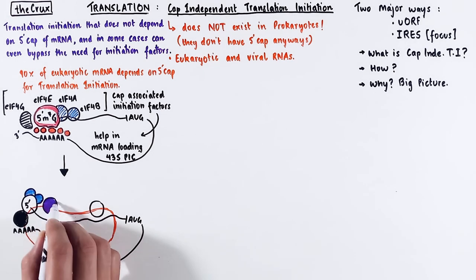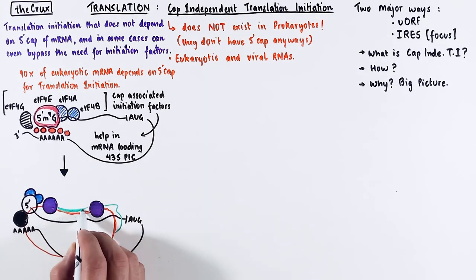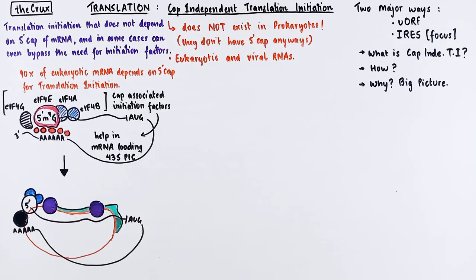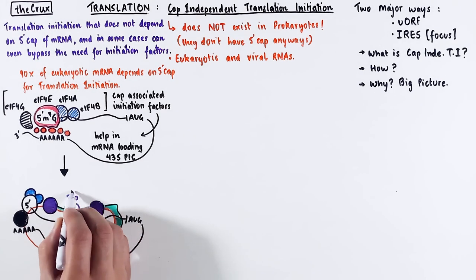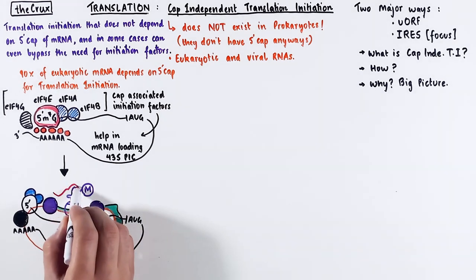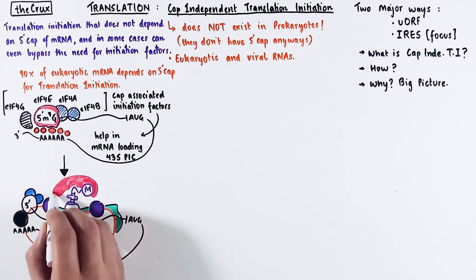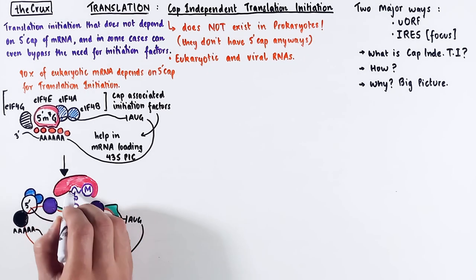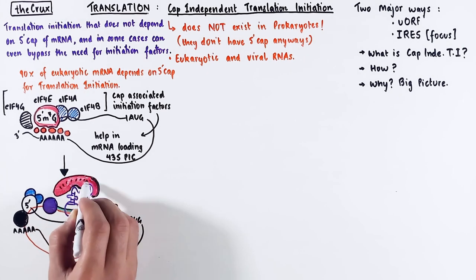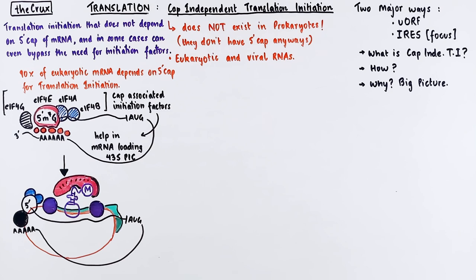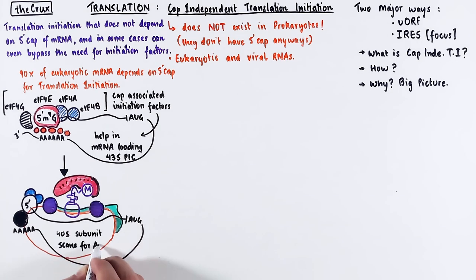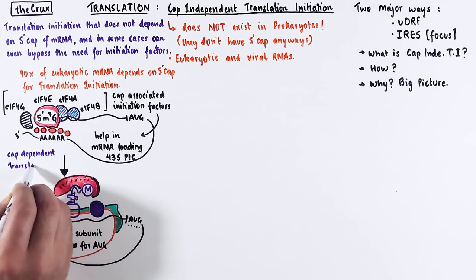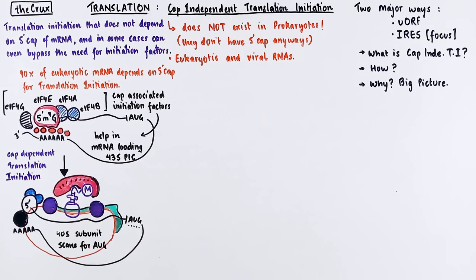Just for the sake of completion, here's the complete 43S initiation complex after the loading of the mRNA, along with the initiation factors and the initiator tRNA. After this complex assembles, the 40S subunit scans for the start codon AUG to position it at the P site. And this is sort of the first half of the canonical translation initiation that depends on the CAP binding factors.